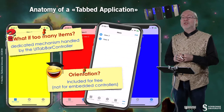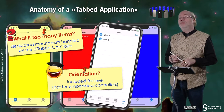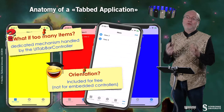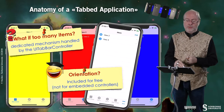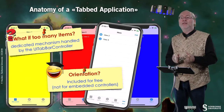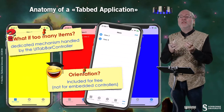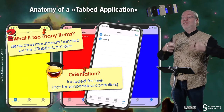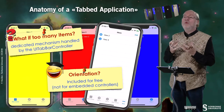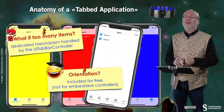Orientation support is included for free — as it is for UITabBarViewController and UINavigationController — but not for the embedded controllers. For example, if you need to change layout on the yellow, red, or blue view, you have to handle that in those controllers by supporting viewWillTransition(to:with:). The role of the tabbar controller itself is to resize the bottom bar with the tabbar items appropriately.